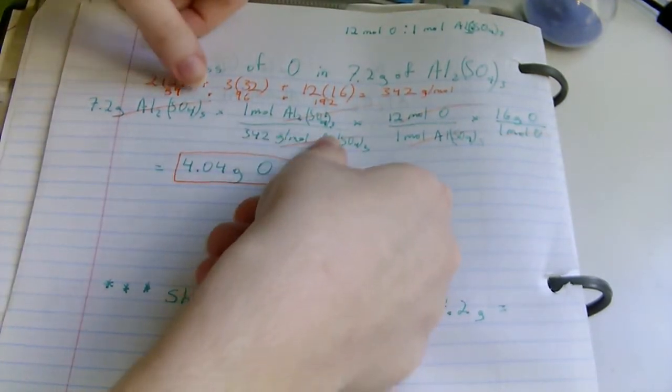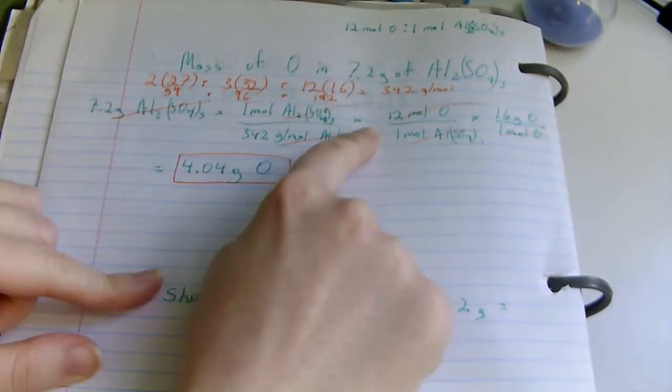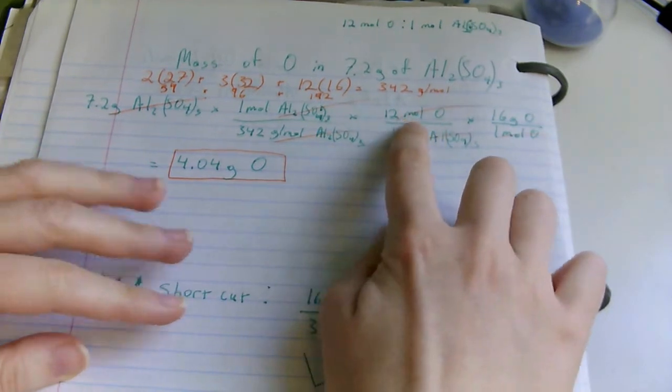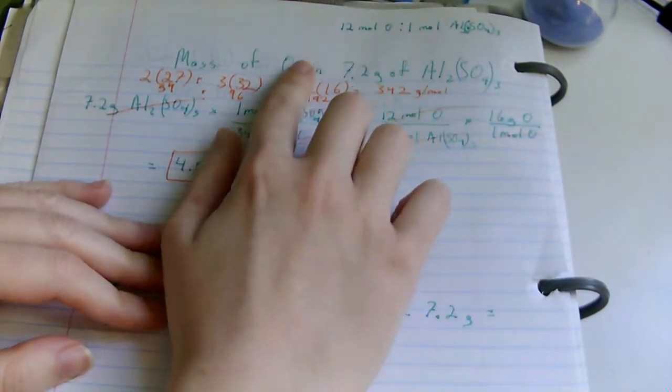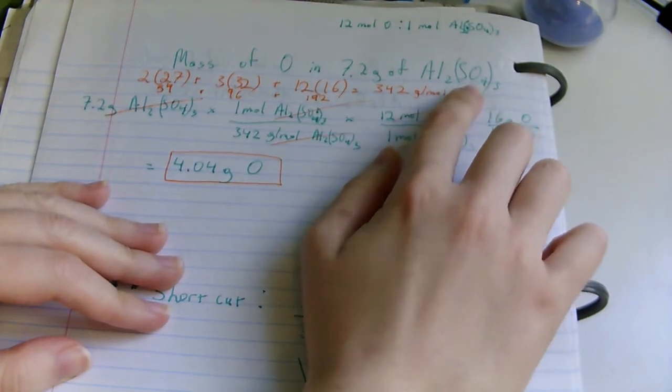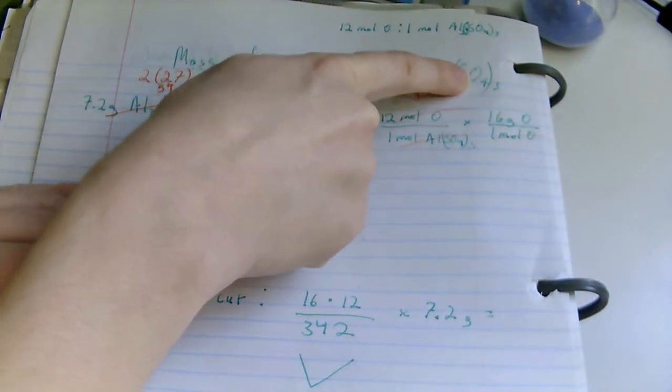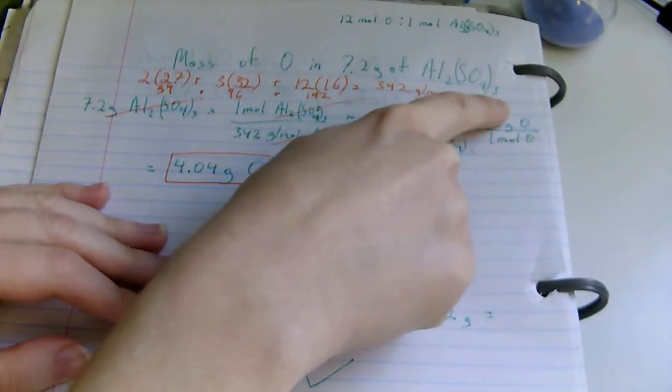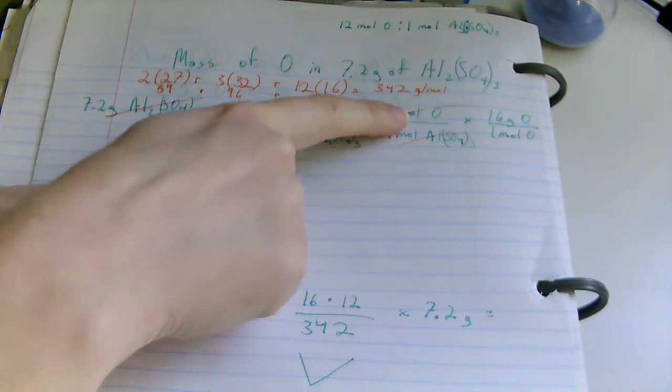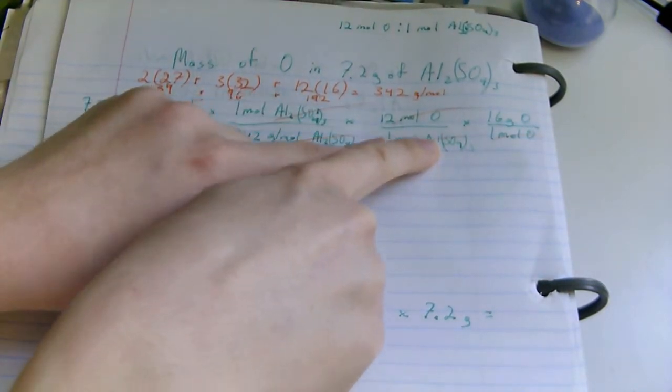Canceling out the grams, we are left with 1 mole relates to, here's the takeaway, 1 mole of aluminum sulfate corresponds to 12 moles of oxygen. And you see this right here. 4 oxygens inside multiplied by the 3 outside, that gives us 12. This corresponds to 1 mole of the whole thing.